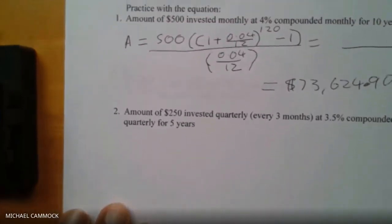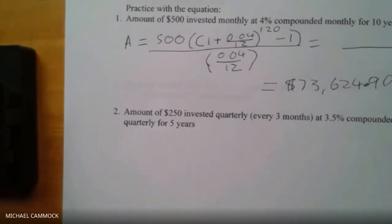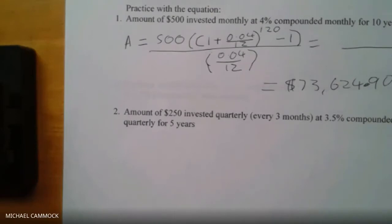Next question: what's the amount if I put $250 in every quarter (every three months, which is four times a year), getting 3.5%, for five years? Every three months I'm going to the bank with $250, they invest it at 3.5%, and after five years — how much money do I have?